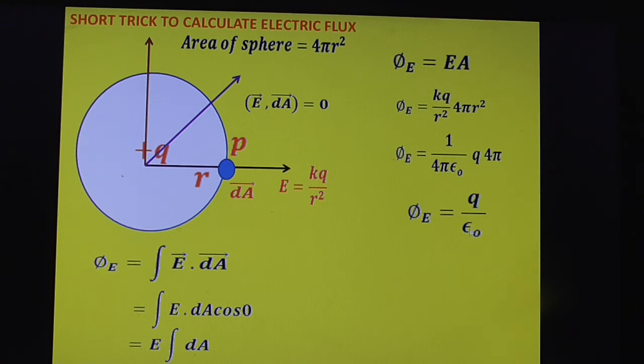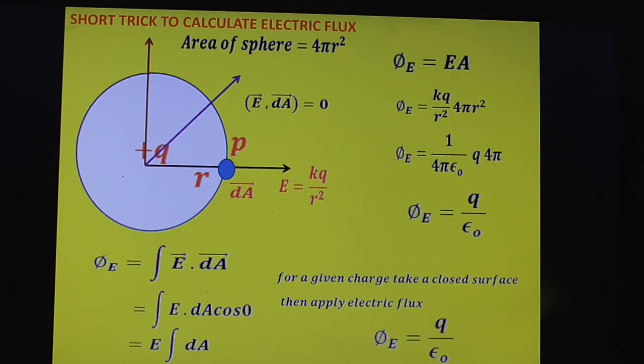This is very important result. No need to apply integration when you find closed surface. For all closed surfaces, directly you can apply the electric flux is equal to Q by epsilon naught. This is very simple technique. For a given charge take a closed surface then apply electric flux as Q by epsilon naught.